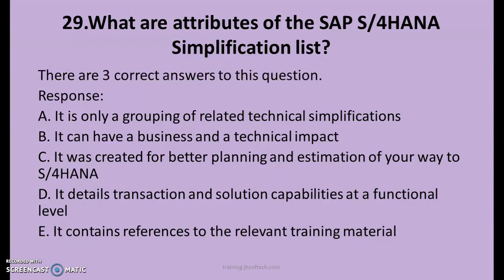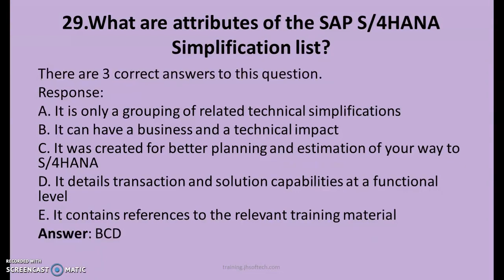29th question. What are the attributes of the SAP S4 HANA simplification list? There are three right answers. A. It is only a grouping of related technical simplifications. B. It can be a business and a technical impact. C. It was created for better planning and estimation of your way to S4 HANA. D. It details transactions and solution capabilities at a functional level. E. It contains references to the relevant training material. The right answers are B, C and D.